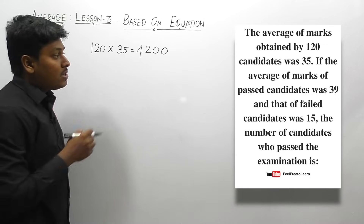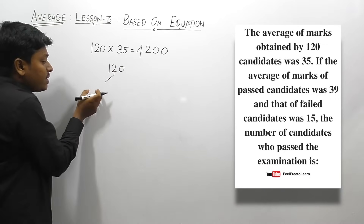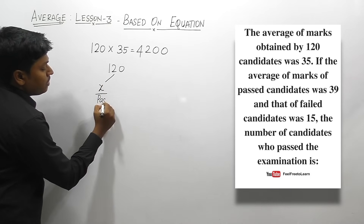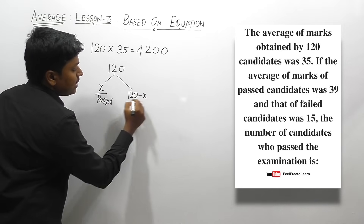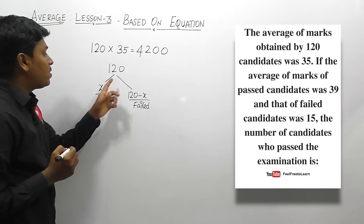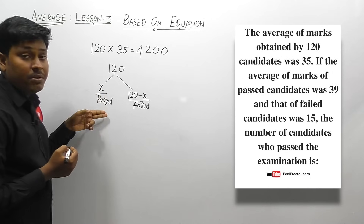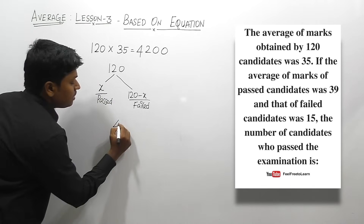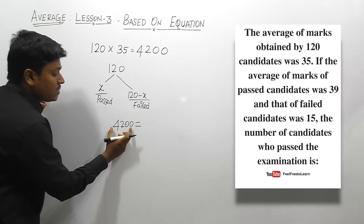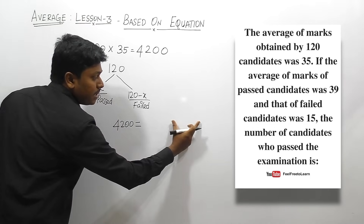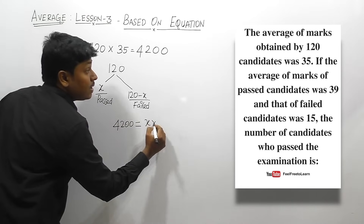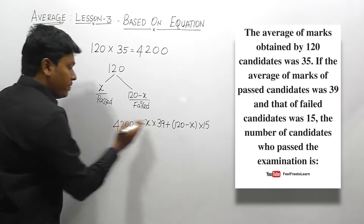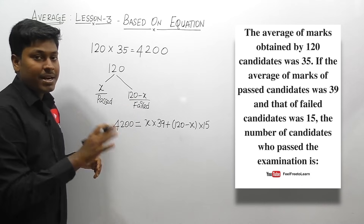We know the total candidates are 120 but we don't know how many have passed or failed. Let me assume x will be the number of candidates who passed, and the remaining 120 minus x will be the candidates who failed. We frame the equation: 4200 equals marks obtained by passed candidates plus marks obtained by failed candidates. Passed candidates are x with average 39, failed candidates are 120 minus x with average 15.